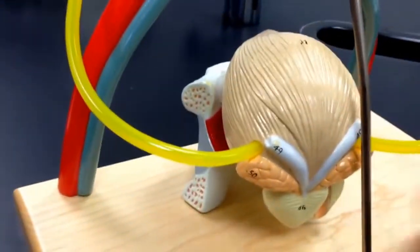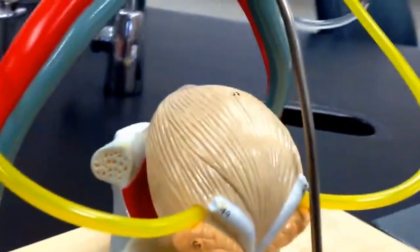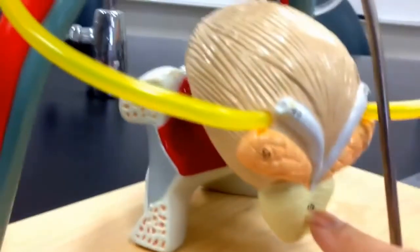The ureter attaches to the bladder. This is the bladder and this is a male. We know it's a male because here we have the prostate gland.